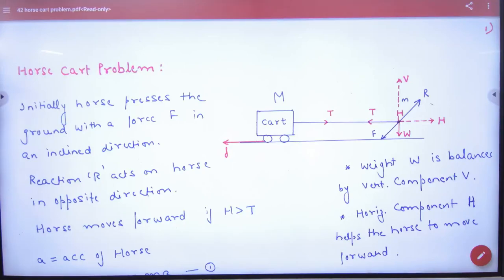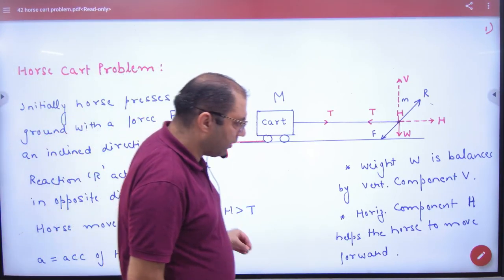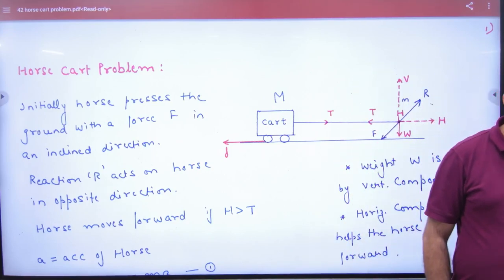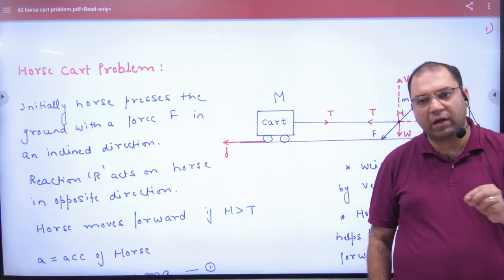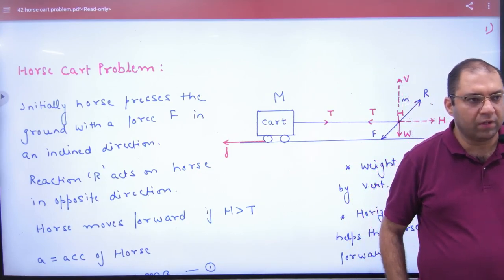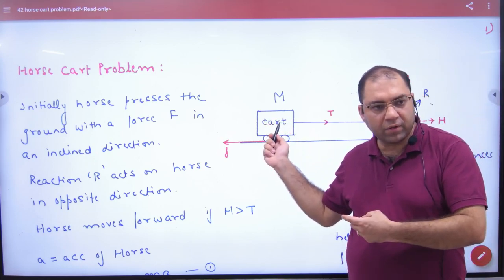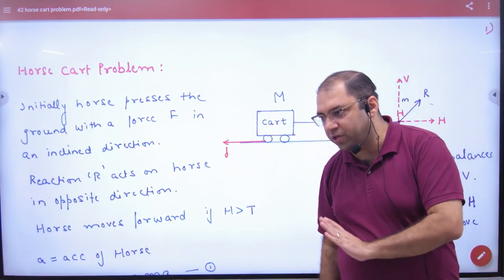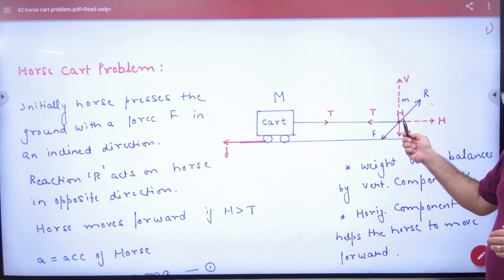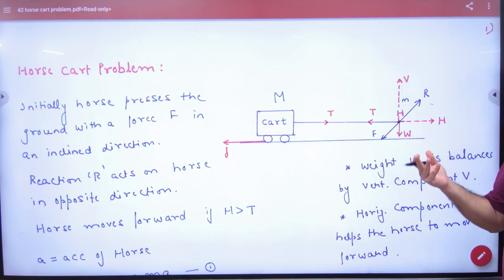In the horse cart problem, there is one horse and a cart. The question is: when will the horse be able to pull the cart forward? This is the condition we need to determine. The cart's mass is big M, and when it goes forward, the force of friction acts backward. This is the horse. We model the horse as a point object, not worrying about its actual shape.